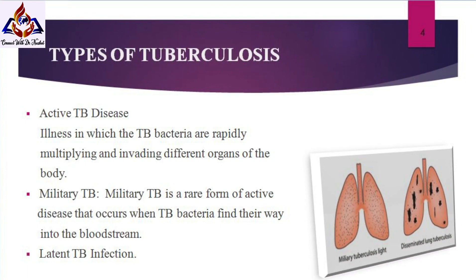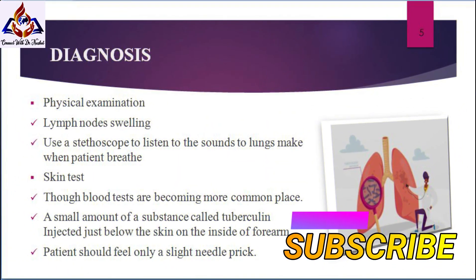Types of tuberculosis: Active tuberculosis disease is an illness in which the TB bacteria are rapidly multiplying and invading different organs of the body. Military tuberculosis is a rare form of active disease that occurs when TB bacteria find their way into the bloodstream. The third type is latent TB infection.